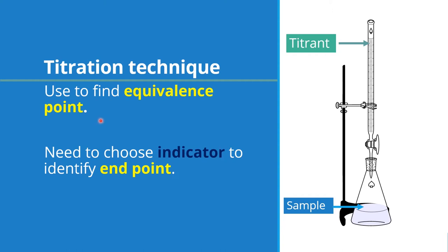Go back again if you are unsure how to calculate this. Sometimes the equivalence point may not be seen or observed by eye, so we need an indicator. The indicator will signal or identify what we call the end point. The end point should in theory be the same as the equivalence point, so the indicator is very important. If you choose a good indicator it will signal a good endpoint which is the equivalence point. If you choose the wrong indicator, it will signal an end point that is not the equivalence point.